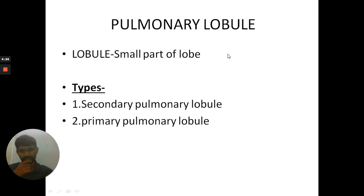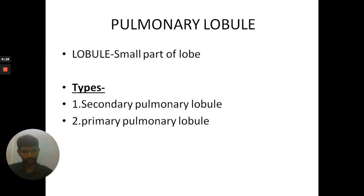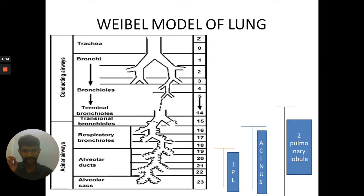So first, what is a pulmonary lobule? A pulmonary lobule is a small part of a lobe. There are two types: the secondary pulmonary lobule and the primary pulmonary lobule. Before going into detail, let us briefly study the Weibel model of the lung.